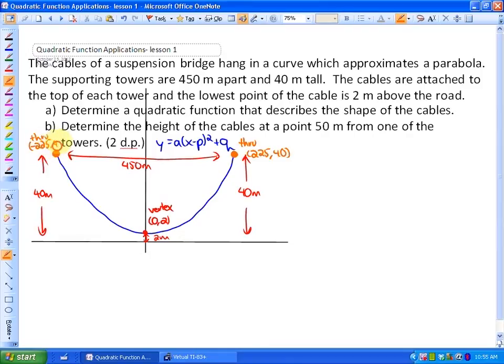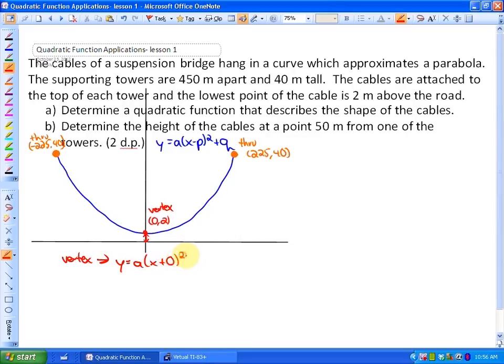So let's use some of the knowledge we know previously to come up with what this quadratic function may look like in vertex form. Alright, so in order to do that, we start with the vertex, with our vertex being at 0,2, we know that our function is y equals a times x plus 0 squared plus 2.